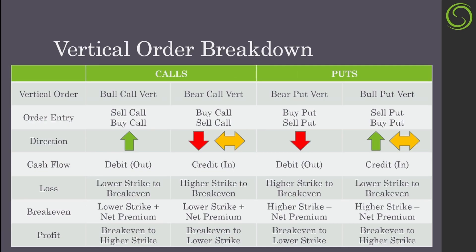So let's get into it. The vertical order — there's four different kinds of vertical orders. There's two for the calls and two for the puts. We got the bull call vertical, the bear call vertical, the bear put vertical, and the bull put vertical. Now that is a lot to go over, but it's not as complicated as it might sound. You got bull, bear, puts, and calls.